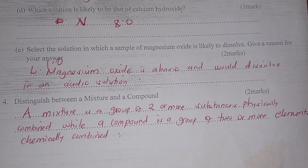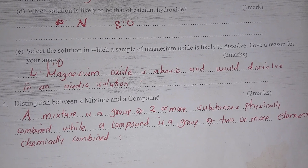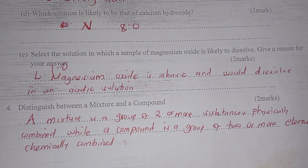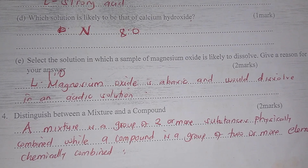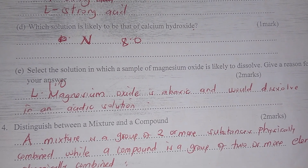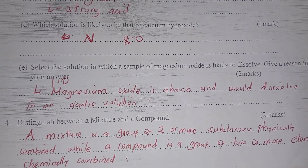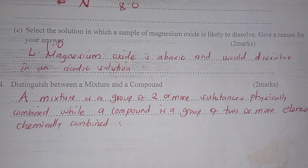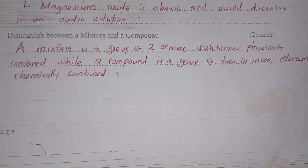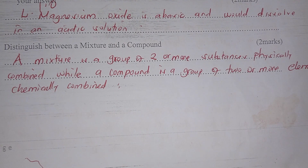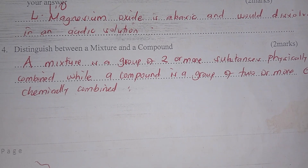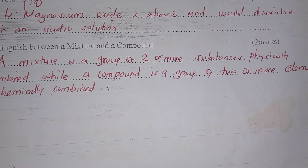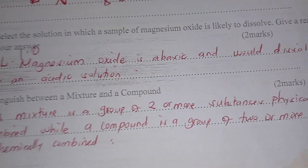Which solution is likely to be calcium hydroxide? Calcium hydroxide is a weak base, and therefore it's supposed to be N. Distinguish between a mixture and a compound: a mixture is a group of two or more substances which are physically combined, while a compound is a group of two or more elements chemically combined.